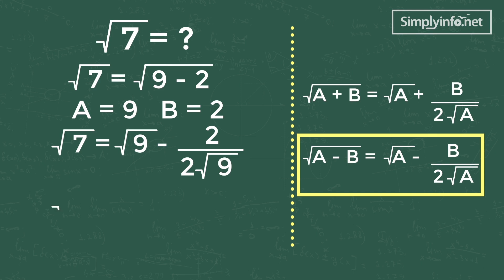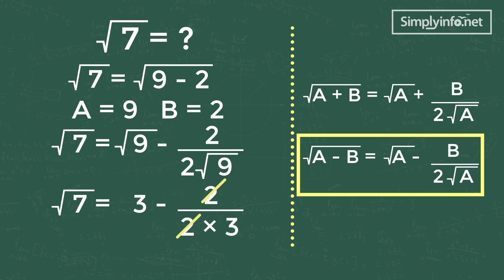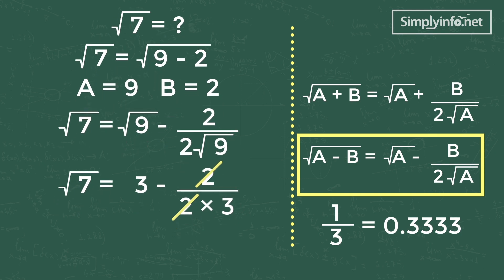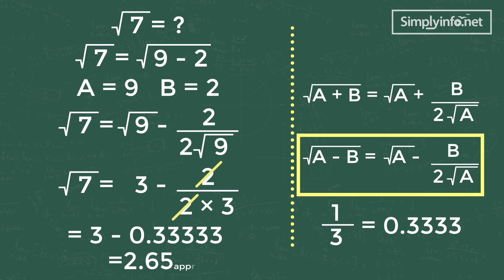We know root 9 is 3, so the equation is root 7 = 3 minus 2 divided by (2 × 3). The 2s cancel, giving 1/3 = 0.333. So 3 minus 0.333 equals 2.666, and the answer is approximately equal to 2.65. See how simple it is!